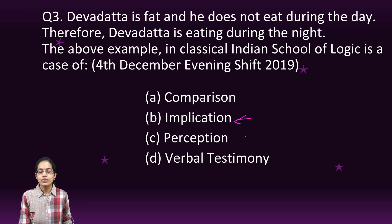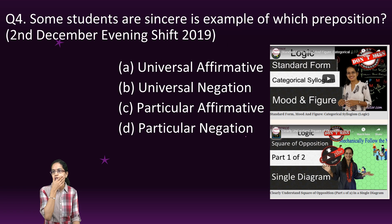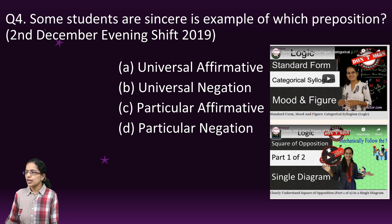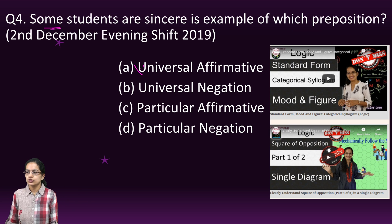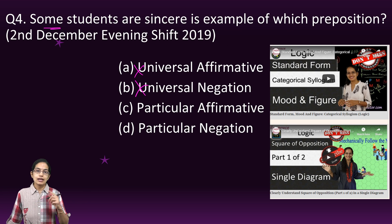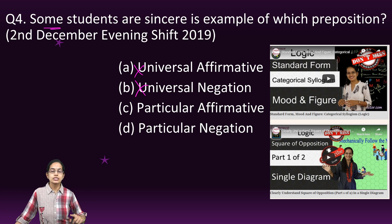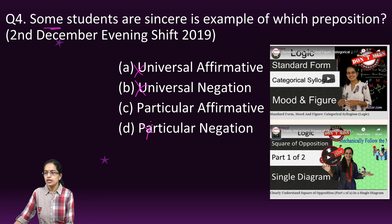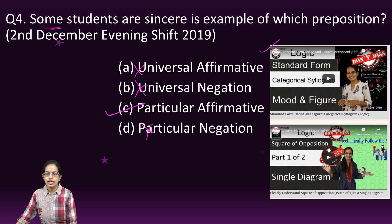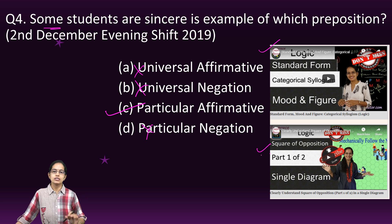When I say 'some students are sincere,' we are talking about 'some,' not 'all,' so it is not universal. And I am saying they are sincere, not that they are not sincere, so it is not negative. Therefore it is a particular affirmative statement. In these two lectures we have talked about the square of proposition and moods and figures.